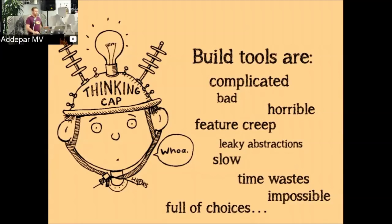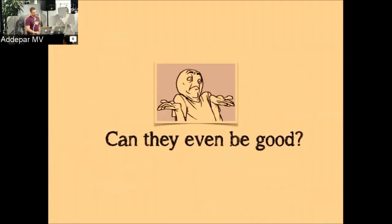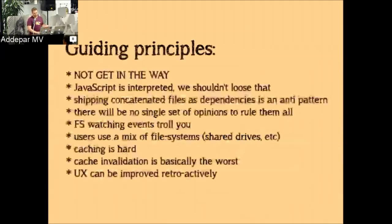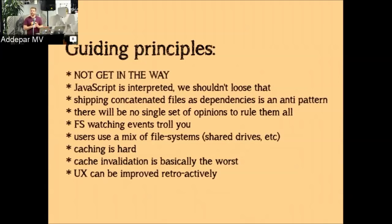Build tools are historically never seen as enjoyable to work with. Often they're complicated, bad, full of feature creep, and hard to make the right choice. Broccoli has some guiding principles. Number one: don't get in the way — once your build pipeline is set up, you should think about your project as if there wasn't a build pipeline, and everything just magically happened. Another goal: JavaScript is interpreted, and if all we're dealing with is pre-built assets, we've lost the hackability of a fully interpreted language.